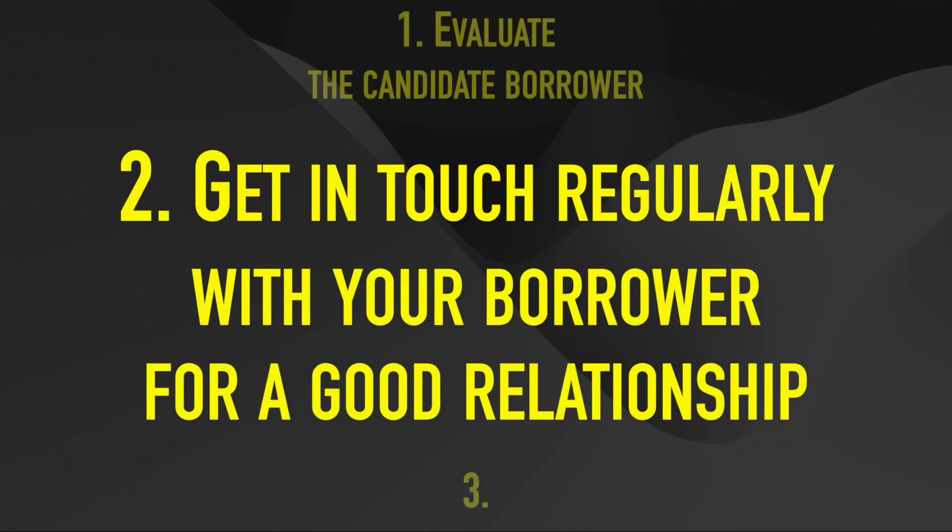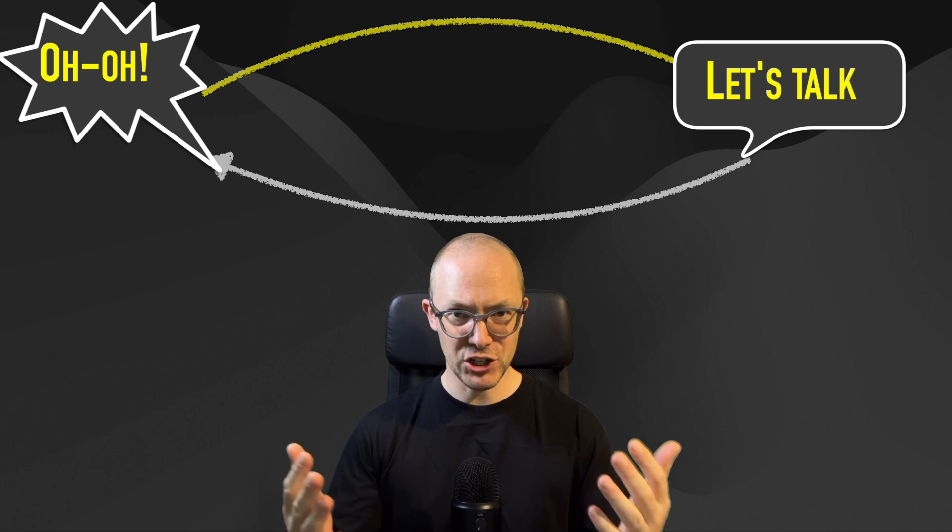The second way to manage your risk is to get in touch regularly with your borrower and develop a good relationship. When things go south, you absolutely want to have an open communication channel — that will help you save the situation in a way that's still advantageous for both parties. Here is an example of the type of open communication you could be having.